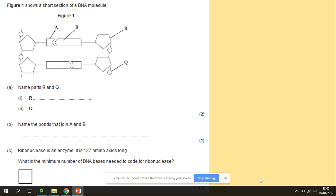Here we've got the short section of DNA molecule. Name the parts R and Q. So R and Q - we've got the deoxyribose and phosphate groups. Be careful. Please use deoxyribose because it's a DNA molecule. You don't want to write pentose. That's too general. So be specific, say deoxyribose. Name the bonds that join A and B. So this is the bond between the bases. So it's a hydrogen bond.